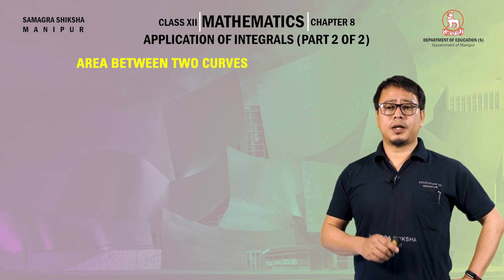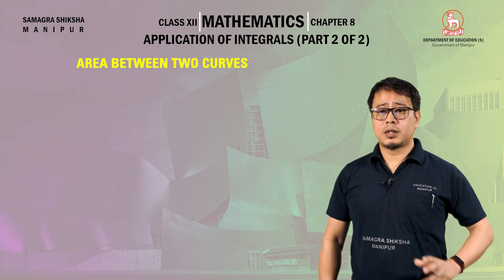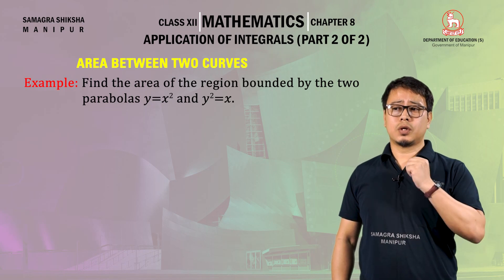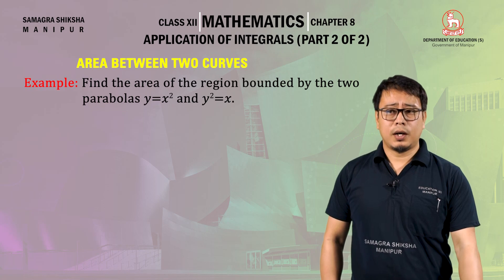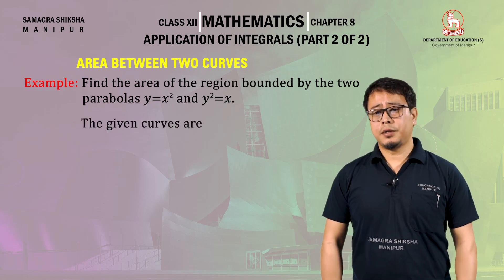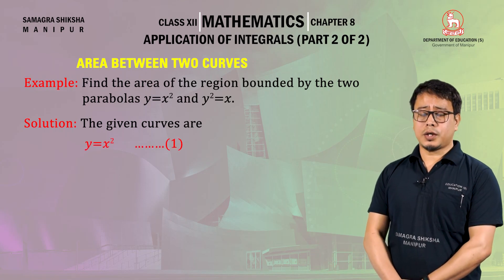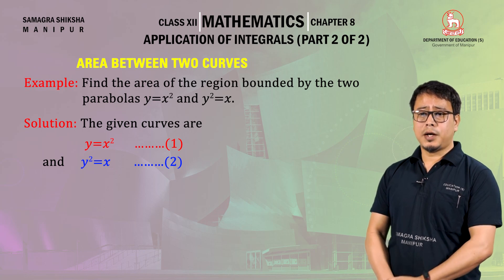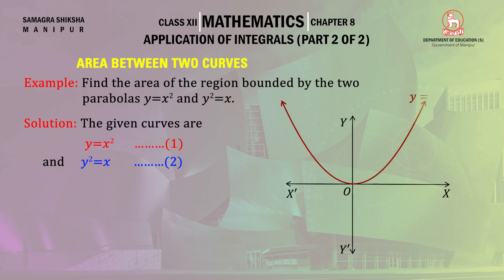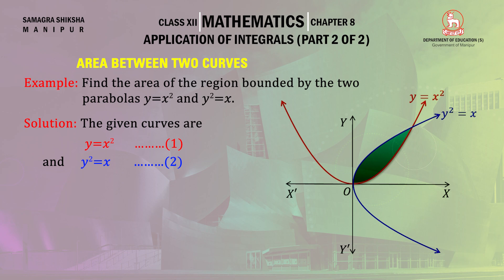Example: find the area of the region bounded by the two parabolas y equal to x square and y square equal to x. The given curves are y equal to x square, equation number one, and y square equal to x, equation number two. The graphical representation shows two parabolas; we need to find the area of the green shaded region between them.